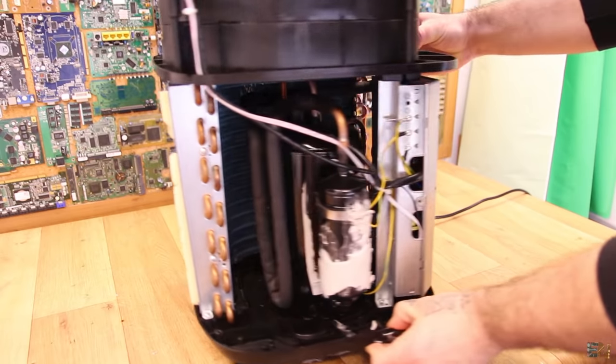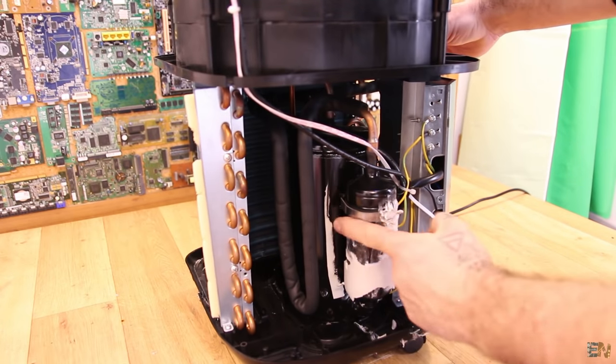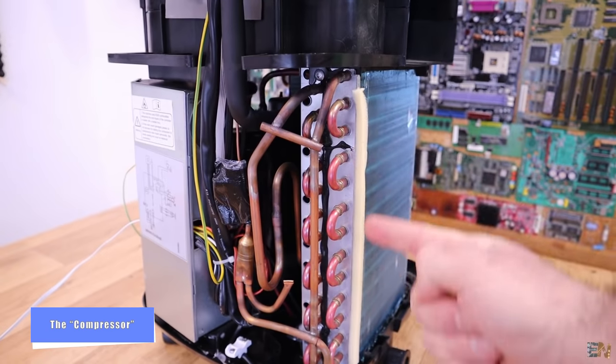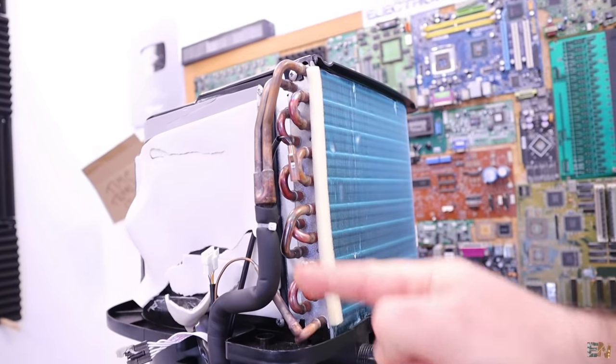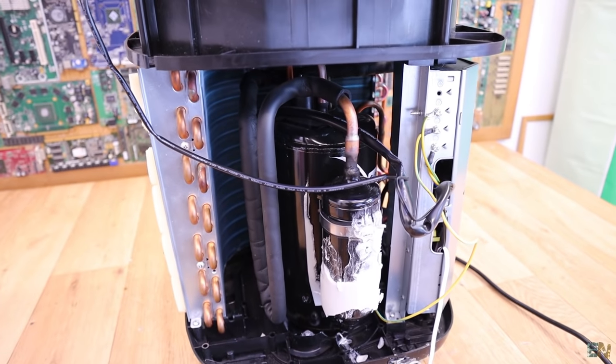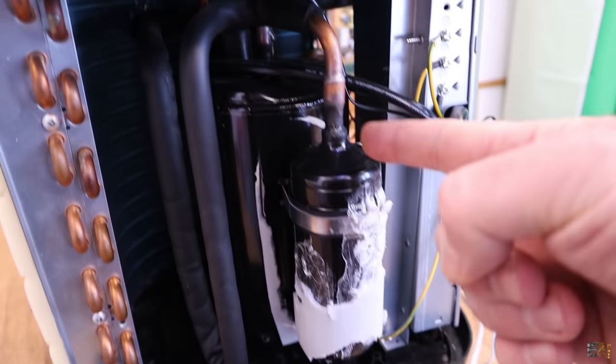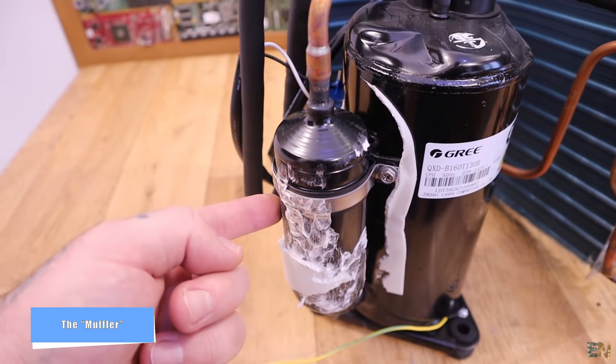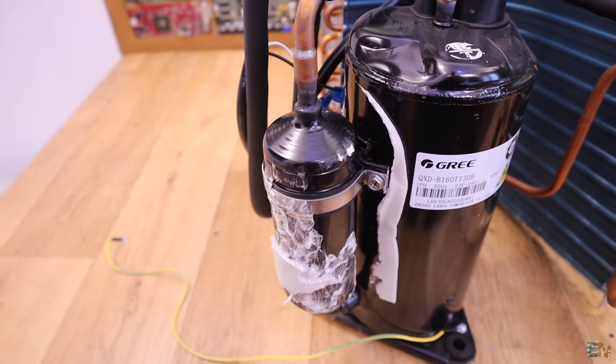So below here on the inside we have a huge component and this is called a compressor. From and to this compressor we can see a lot of copper tubes that are going to those radiators or from those radiators. On the output of the compressor we also have this component that is called a muffler and this is used to reduce the buzzing and the hissing noise from the compressor.